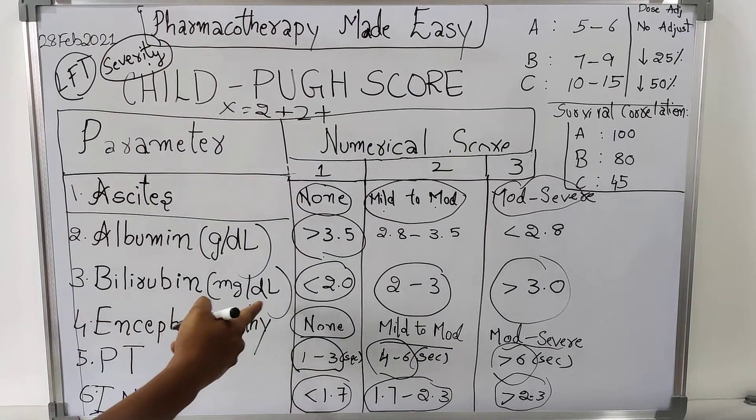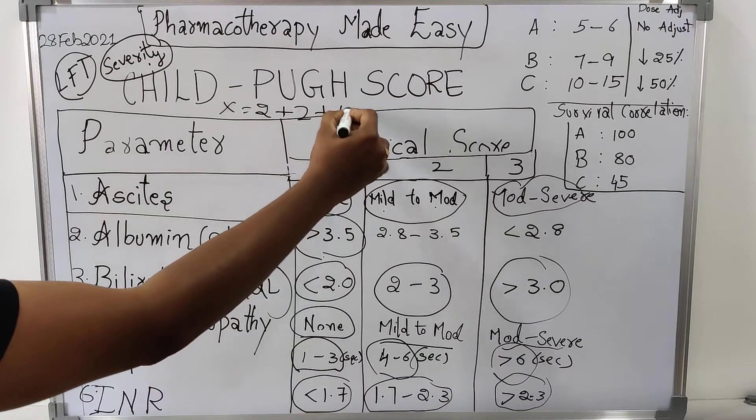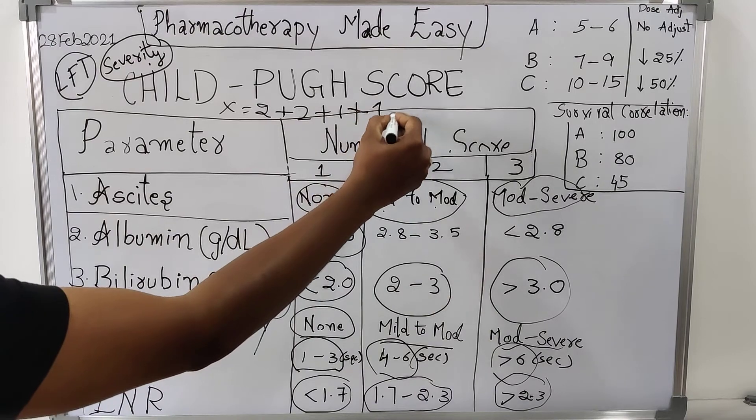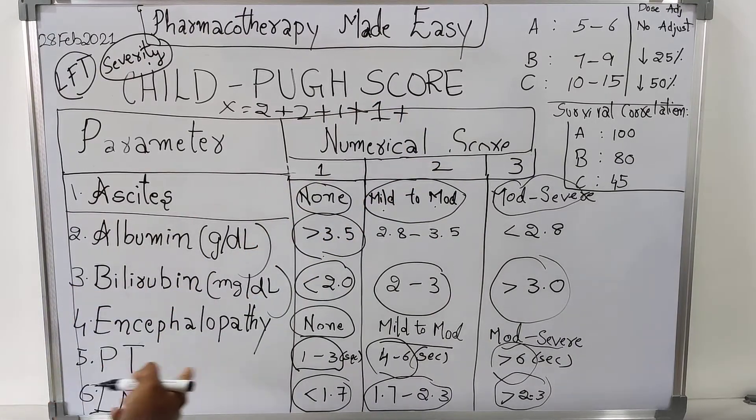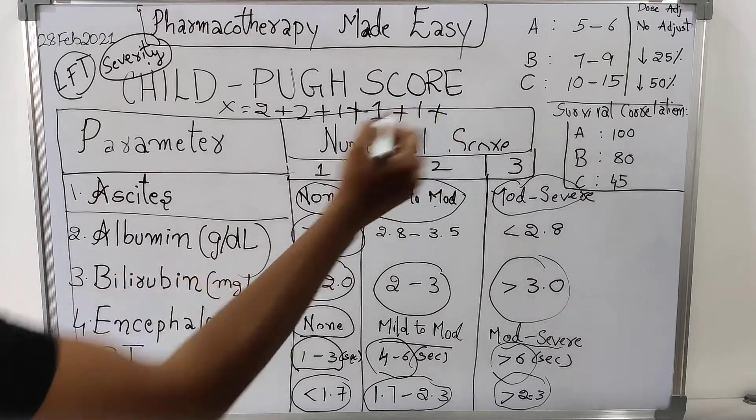Plus 2 to the next parameter, bilirubin. Let us think the bilirubin is less than 2. Then score will be 1. If encephalopathy is absent in the patient, score will be 1 again. Next, if prothrombin time is in the normal range, that is 1 to 3, then score will be 1.